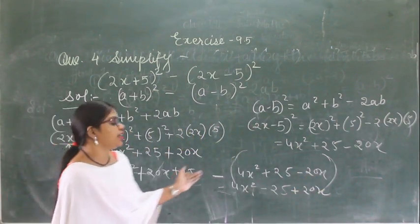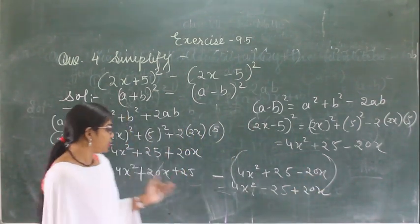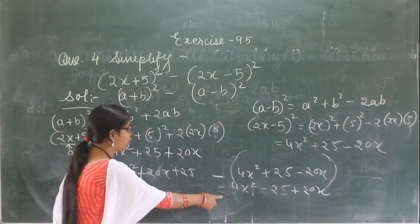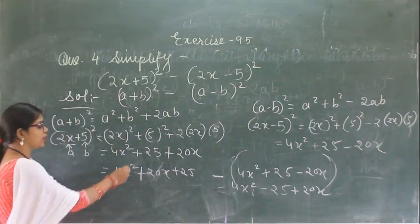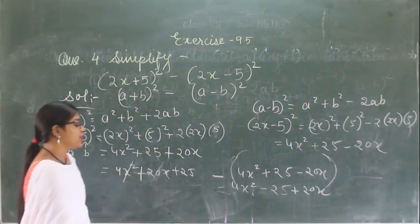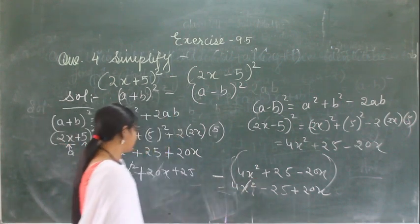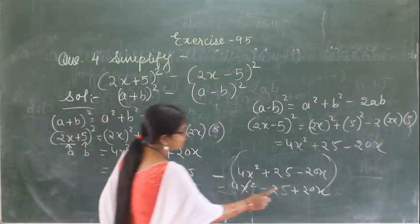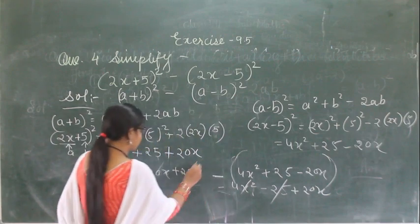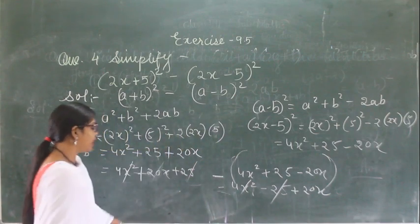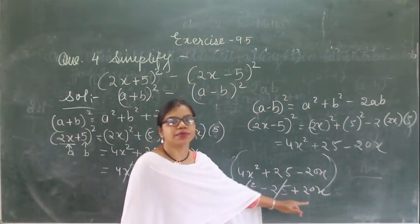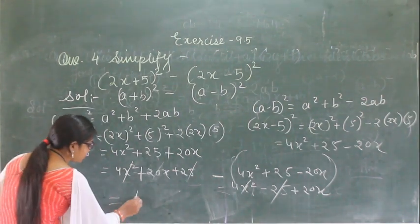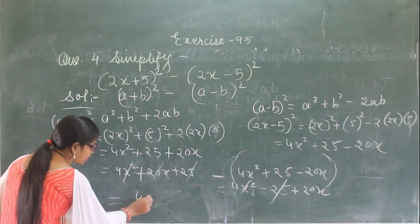Now cancel the terms which cancel out. 4x square and minus 4x square cancel. Plus 25 and minus 25 cancel. We are left with 20x plus 20x, giving 40x. This is the answer.